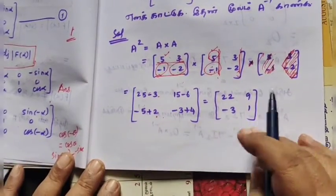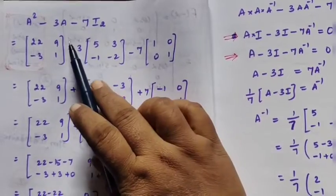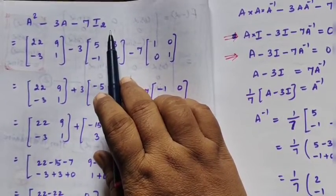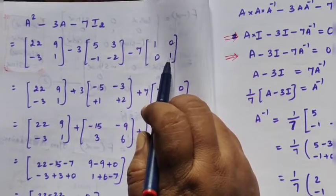After simplifying, we have A² minus 3A minus 7I₂. I₂ is the 2 by 2 identity matrix. So the 2 by 2 matrix is 1, 0, 0, 1.